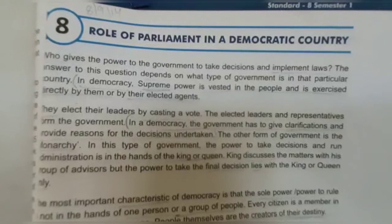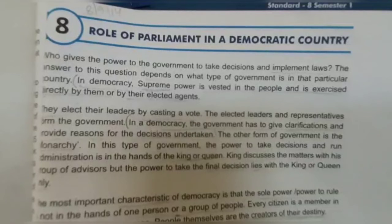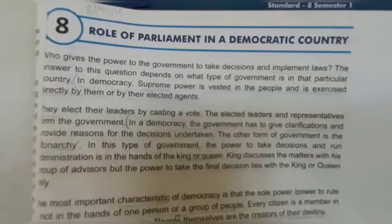The Rajya Sabha is a permanent house — it is never dissolved fully. One third of the members retire at the end of every second year, and the same number of members are re-elected in their place. The Vice President of India acts as the Chairman of Rajya Sabha.